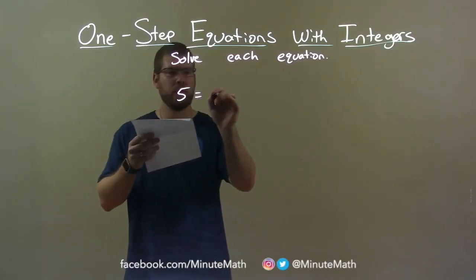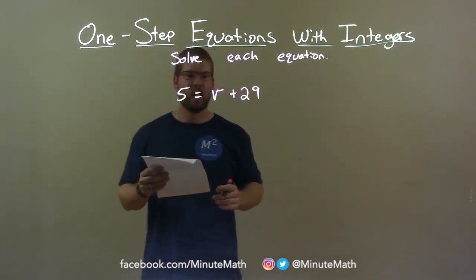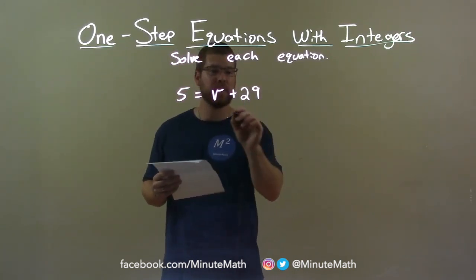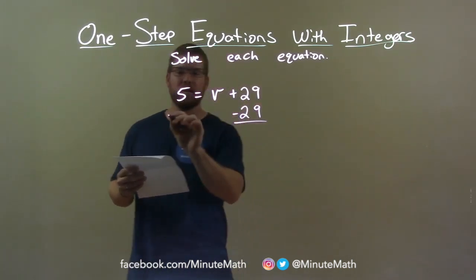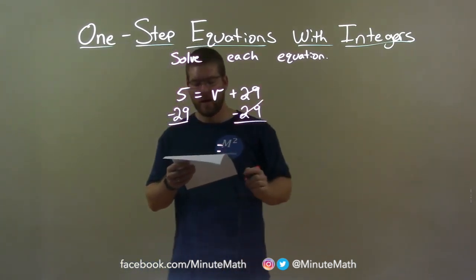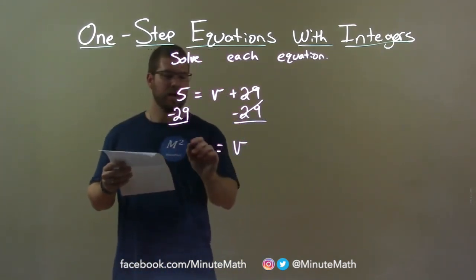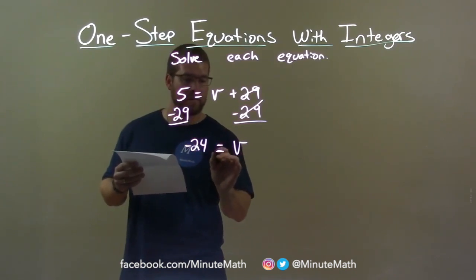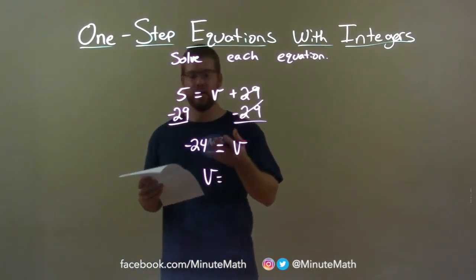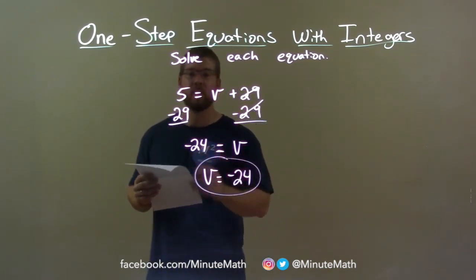5 equals v plus 29. I want to get v by itself. So to do that, I do the opposite of the addition with 29 — subtraction. I'm going to subtract 29 from both sides. The 29s on the right cancel, leaving v by itself. But 5 minus 29 is negative 24. I can put v first: v equals negative 24 is my final answer.